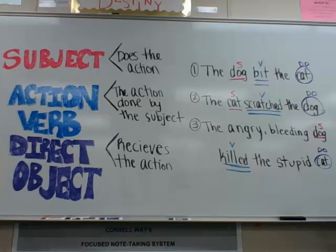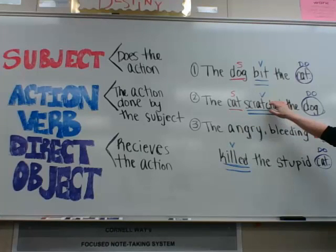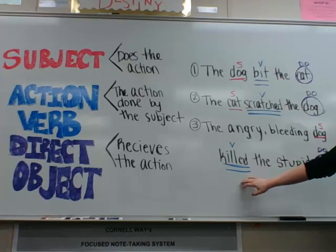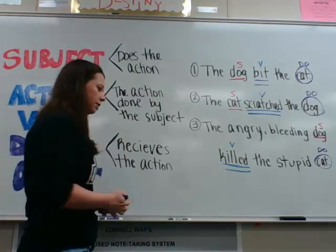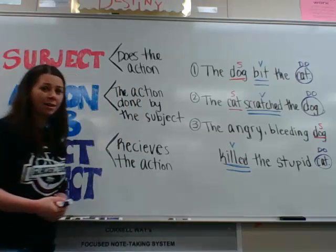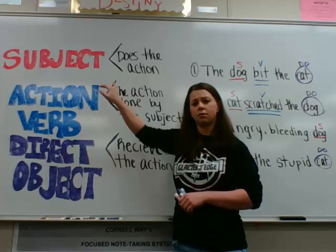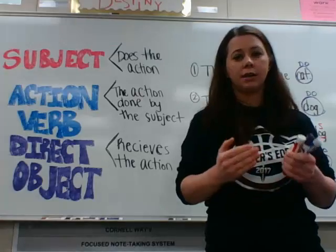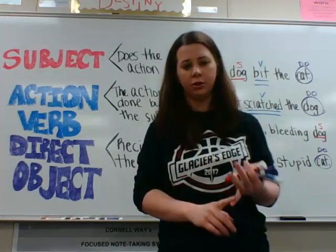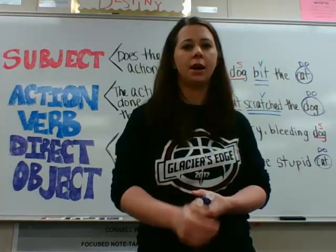If you look at these three sentences, you'll notice a pattern. It always goes subject, action verb, direct object — subject, action verb, direct object. That's because sentences in the English language follow the pattern of subject first, followed by the action verb, followed by a direct object. If you can identify the subject, action verb, and direct object, you'll notice that pattern — and noticing that pattern is going to help you when it comes to active and passive voice.